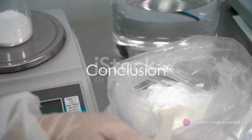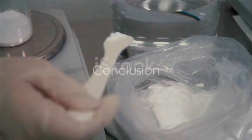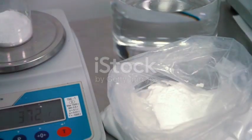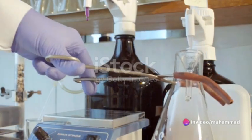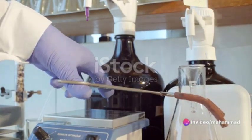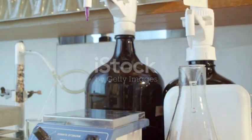In summary, gravimetric titration is a precise method of determining the concentration of an analyte in a sample by weighing the precipitate formed. The process involves careful preparation, precipitation, separation, washing, and weighing, each step crucial to the accuracy of the results.